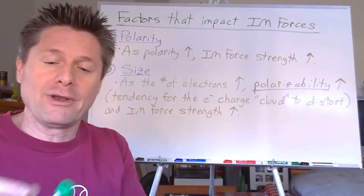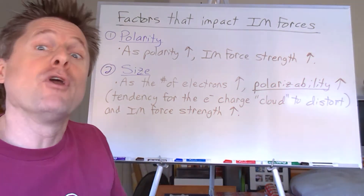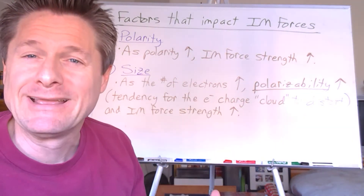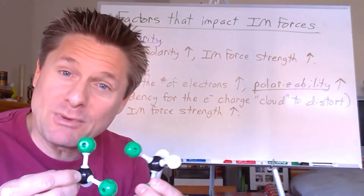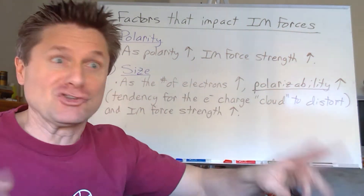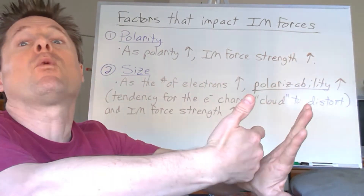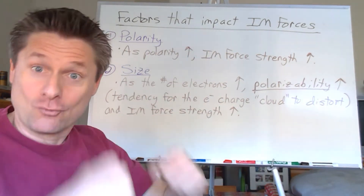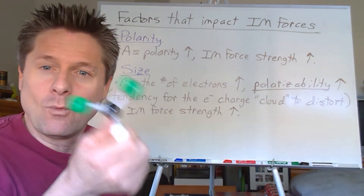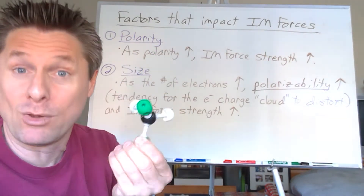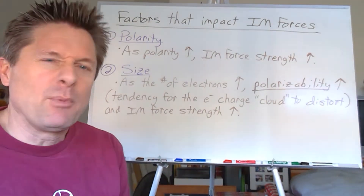The more polar a molecule is — the more asymmetric its electron cloud distribution — the stronger the attraction between molecules will be. This ranges all the way to ionic, which is essentially super-polar: electrons are fully transferred, creating cations and anions with very strong attraction. So the first thing I always look for when assessing intermolecular forces is: is this a polar molecule or not?